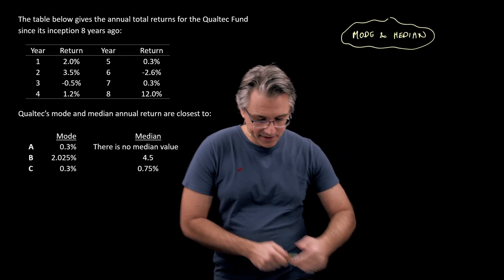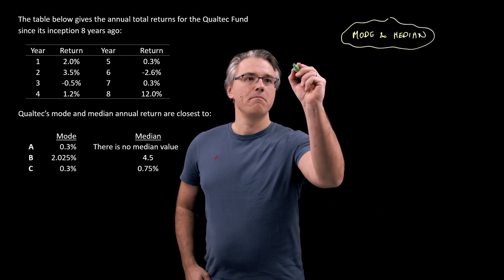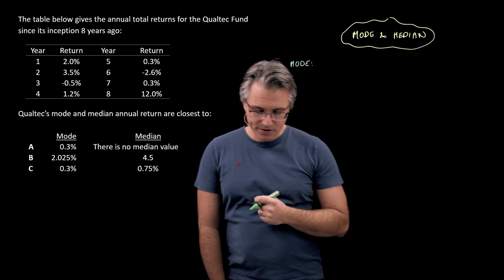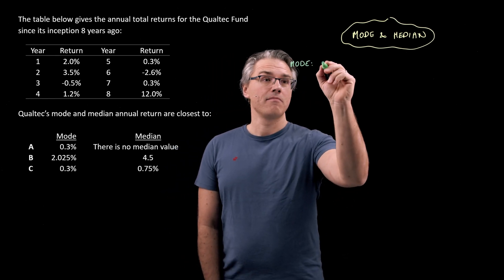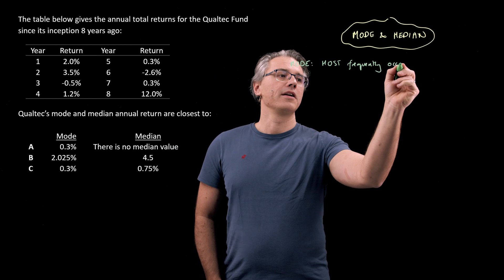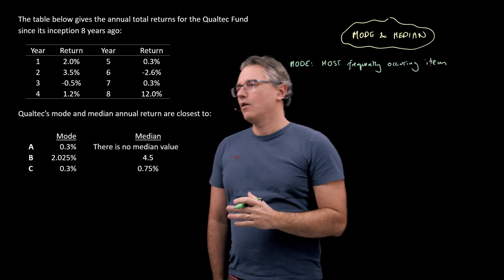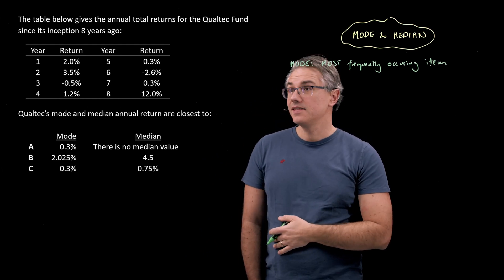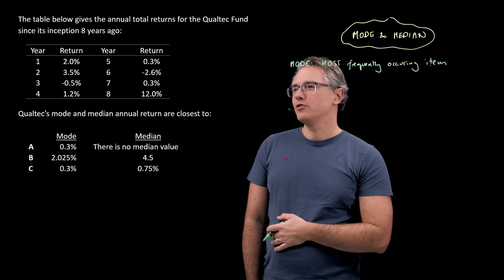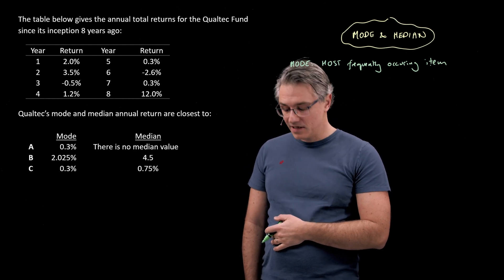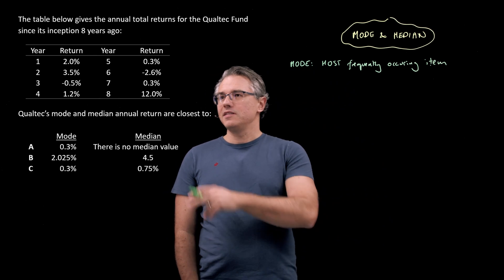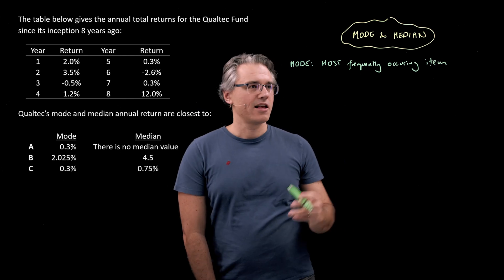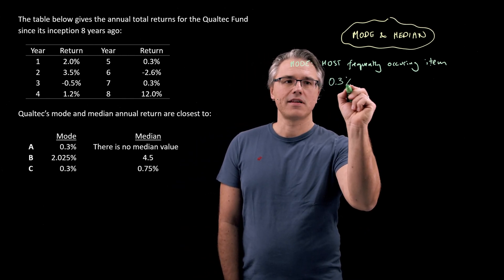Right, let's get started. Let's first of all define the mode. The mode is simply the item which occurs the most - the most frequently occurring item. And when you're looking for this one, you just need to observe the data and see if there is indeed an item which appears most frequently. For me, that seems to be the 0.3 which appears over here and up here as well. So I guess 0.3%.